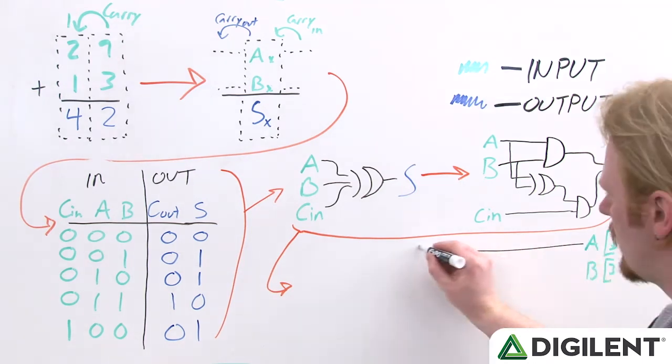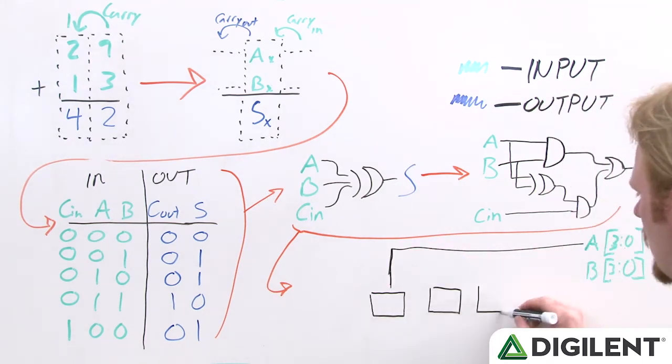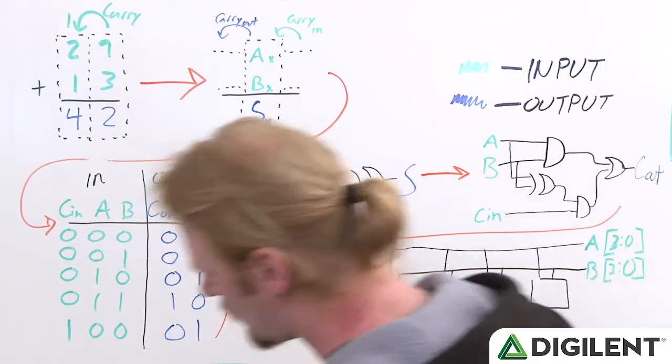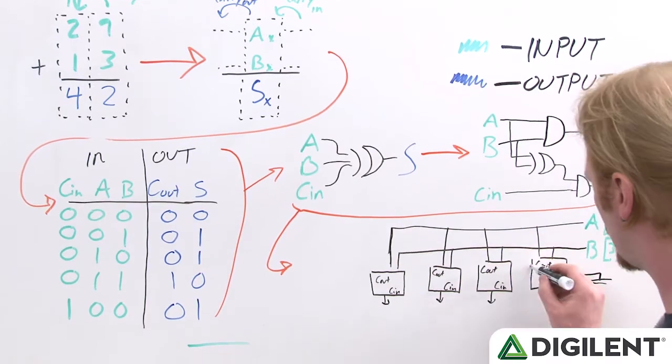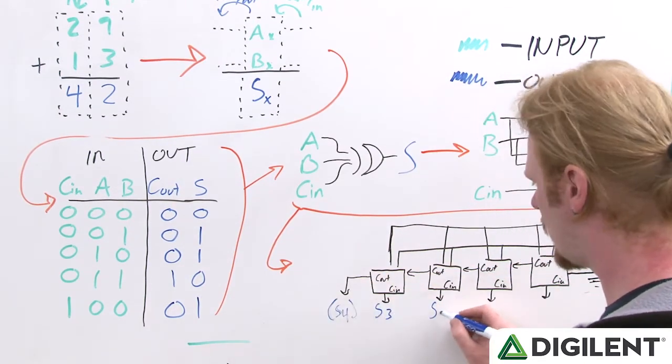From here we can put our pieces together into a block diagram. From our block diagram, we can see how our two 4-bit inputs are added together bitwise to produce our output.